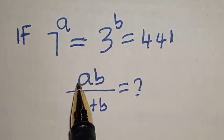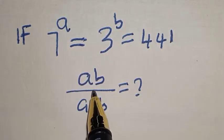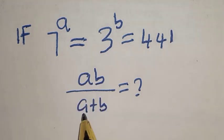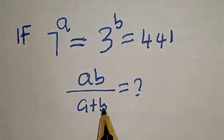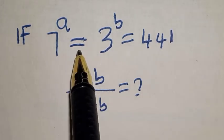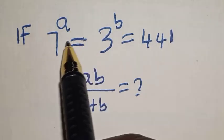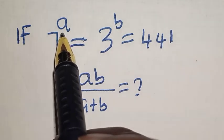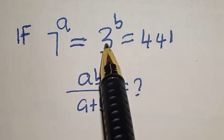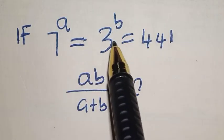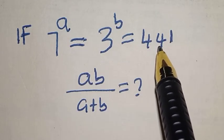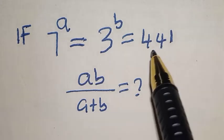Hello, welcome to Math This. In this class, we want to find the value of ab divided by a plus b, from the given equation where 7 raised to power a is equal to 3 raised to power b is equal to 441.